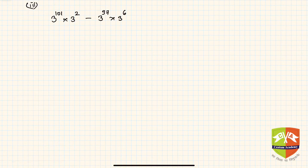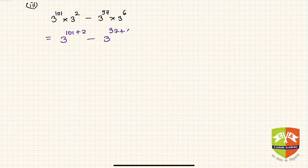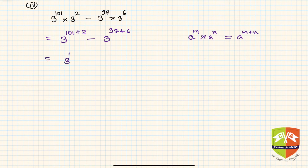In the next question, three bases are the same and there are powers, so I can write: 3 × 3¹⁰¹ - 3⁹⁷ × 3⁶. Using the rule aᵐ × aⁿ = aᵐ⁺ⁿ, this becomes 3¹⁰³ - 3¹⁰³. Both are the same, so the difference is 0.